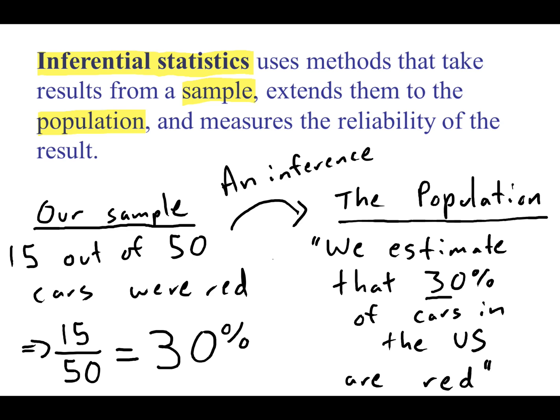Is that totally true? Probably not. But it might be close. And that's another important part of statistics is how reliable our result is. How much can we trust the idea that potentially 30% of cars in the United States are red because 30% of our sample was a red car?